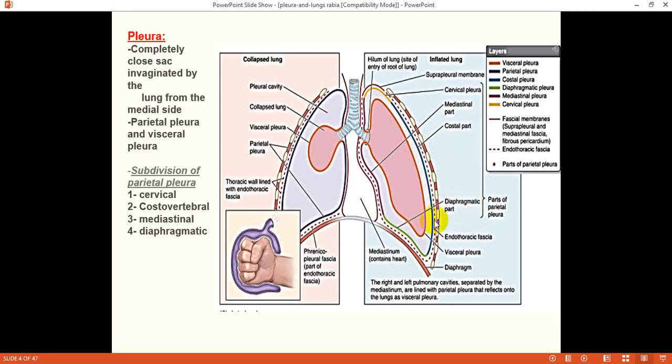Parietal pleura and these peripheral structures are separated by connective tissue layers. The cervical pleura is covered by a thick connective tissue layer which is called suprapleural membrane. This suprapleural membrane protects the apex of the lung and cervical pleura. The mediastinal part is separated by a thin loose connective tissue layer from fibrous pericardium. The diaphragmatic surface is separated from the actual part of diaphragm by a loose connective tissue layer which is called phrenicopleural fascia.